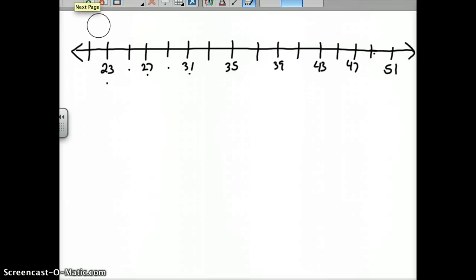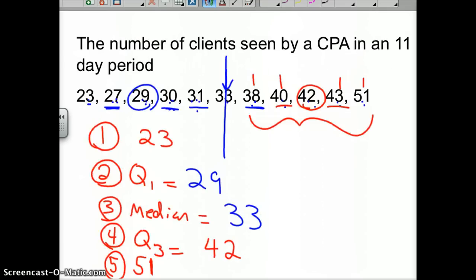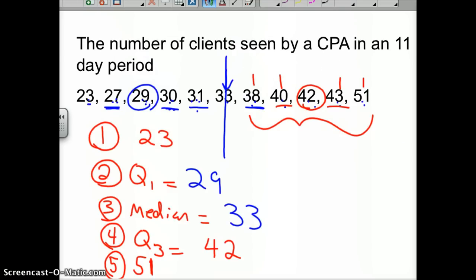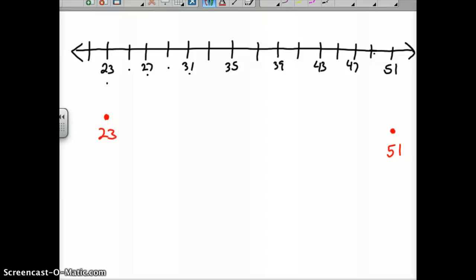A box and whisker plot, or a box plot, is simply now we're going to plot that five-number summary underneath here. Quartile 1 is 23, so I'll put a little mark and label it 23. I like to then mark my top, which was 51, which is clear over here at 51.